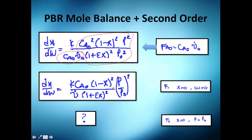We substitute the concentration in and square all those terms. We have conversion, we have mass — but it's actually getting worse, because that square doesn't seem good. It seems that the pressure drop effect is doubled — squared — so we still need that pressure drop equation. It gets complicated and more complicated as you increase the reaction order, and pressure is a key factor.